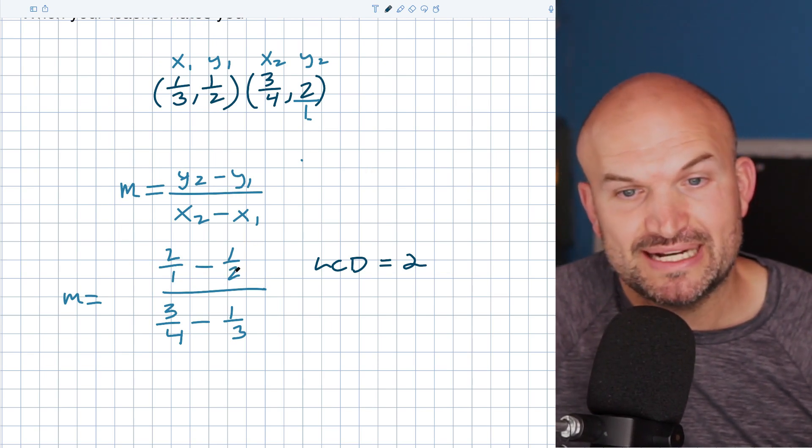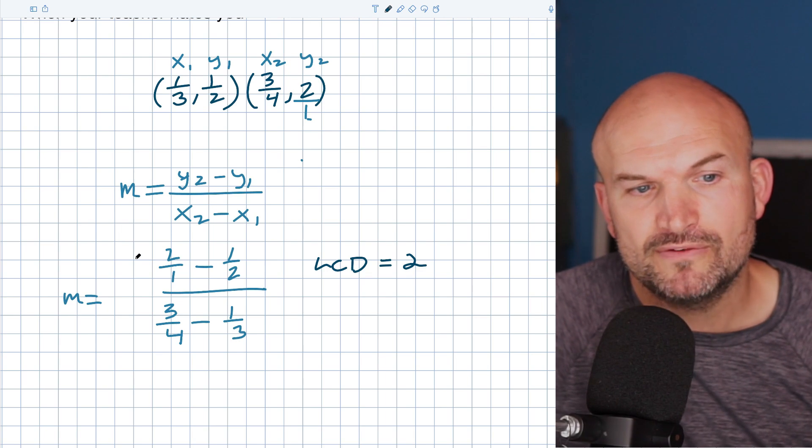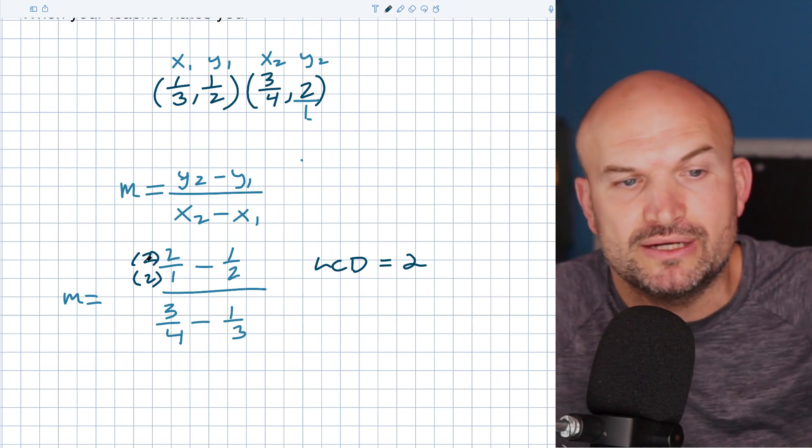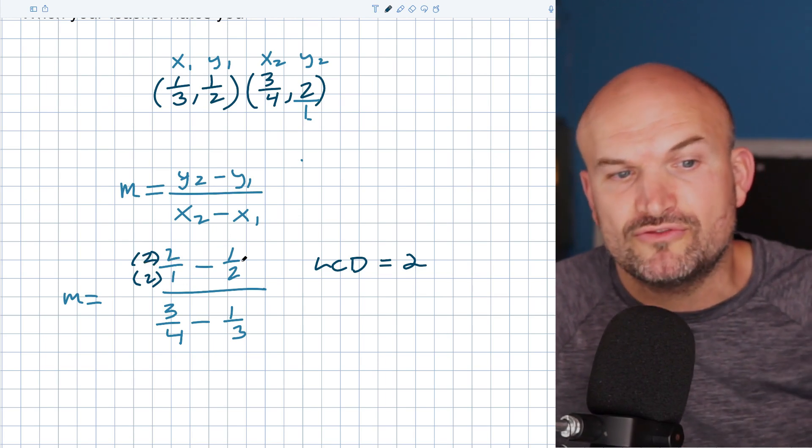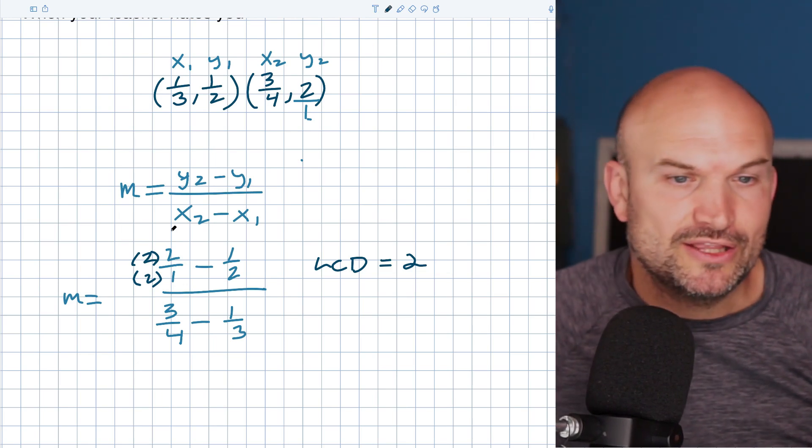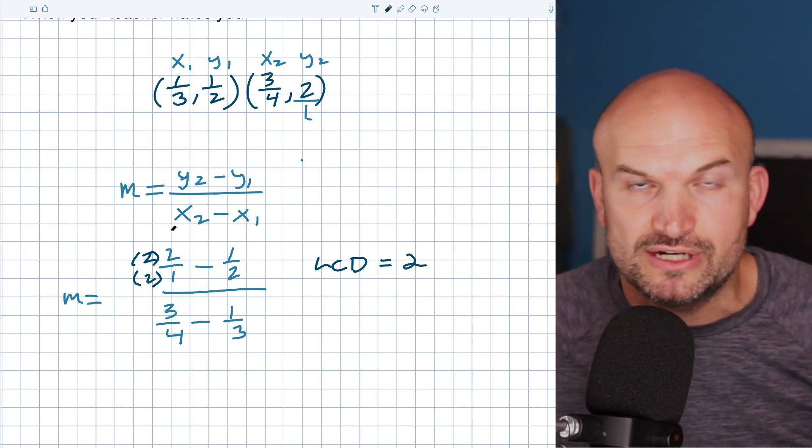Now this already has a 2 in my denominator. So I don't need to do anything over there. But over here, I need to multiply by 2/2 in the numerator and the denominator. You got to make sure you do in the numerator and the denominator to keep what we call equivalent fractions. So you got to produce the same fraction, right? You can't just multiply in the denominator or multiply in the numerator. Then you're going to have a, the ratio is going to be off.